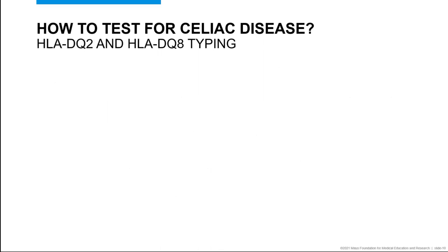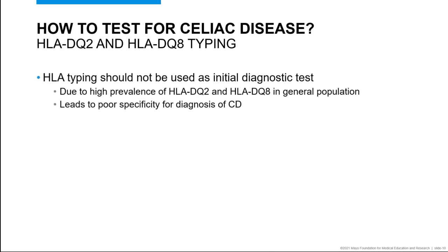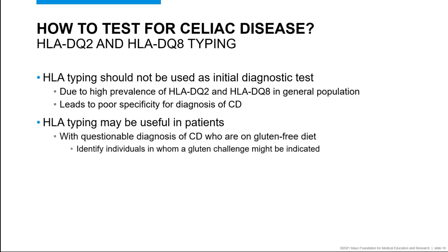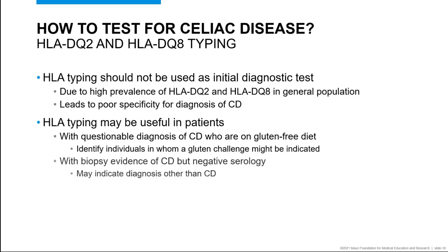The next area to consider is HLA-DQ2 and DQ8 typing. There is general agreement across the guidelines that HLA typing should not be used as part of the initial diagnostic evaluation for celiac disease, and in fact is not needed to establish a diagnosis. However, there are some situations where HLA typing might be useful. Most guidelines recognize the value of HLA typing in patients who are on a gluten-free diet but in whom the diagnosis of celiac disease is uncertain — in this case, a gluten challenge would be considered for those individuals positive for either DQ2 or DQ8. In addition, most guidelines advocate for HLA typing in patients who have evidence of celiac disease on biopsy but negative serology testing; in these patients, the absence of HLA-DQ2 and DQ8 likely indicates an alternate diagnosis.